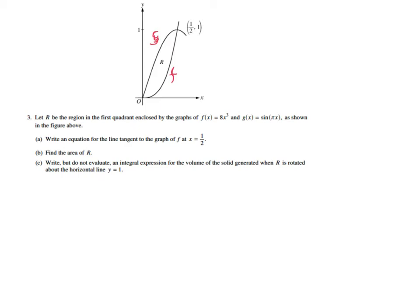Part A wants us to write an equation for the line tangent to the graph of F at x = 1/2. To write the equation of the tangent line, the easiest thing to do is to treat this like point-slope form, much easier than slope-intercept form. In point-slope form, I need to know a point (x₁, y₁) and the slope.